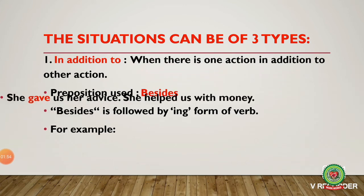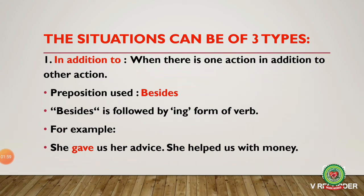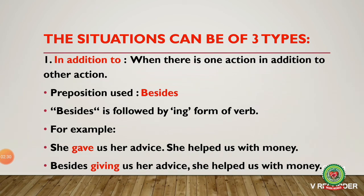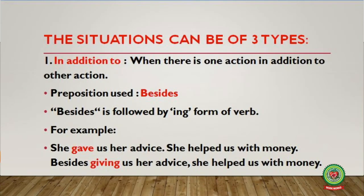Let us take an illustration. 'She gave us her advice. She helped us with money.' Both sentences have the same subject — she — so we use 'she' only once. The verb in the first sentence is 'gave,' so it changes to 'giving.' The answer would be: 'Besides giving us her advice, she helped us with money.'